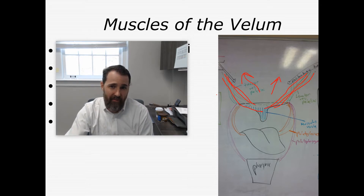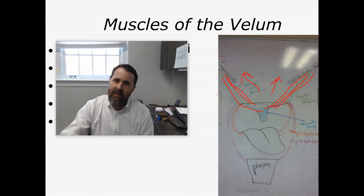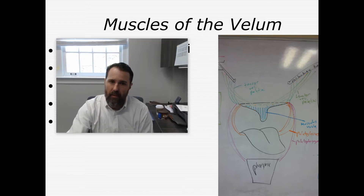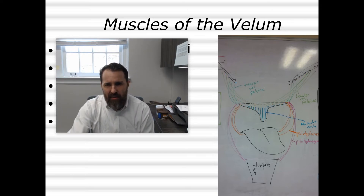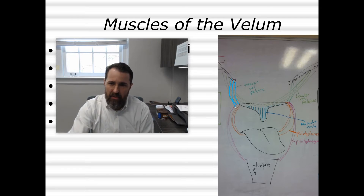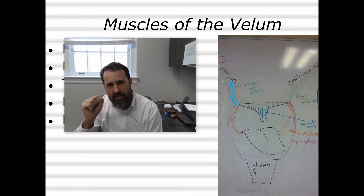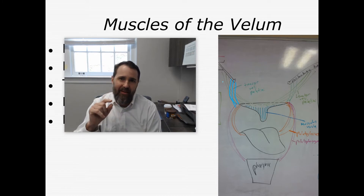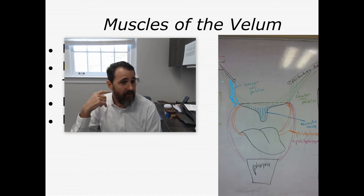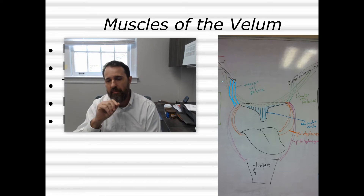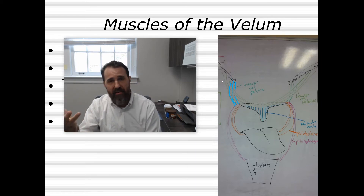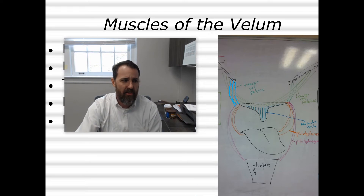The levator veli palatini is the primary elevator of the soft palate. The next muscle is also up here — the tensor veli palatini. It runs from the eustachian tube down to the lateral portions of the velum. The purpose of the tensor veli palatini is that it dilates the eustachian tube, opening it to allow fresh air to get from the nasopharynx into the middle ear, aerating the middle ear.